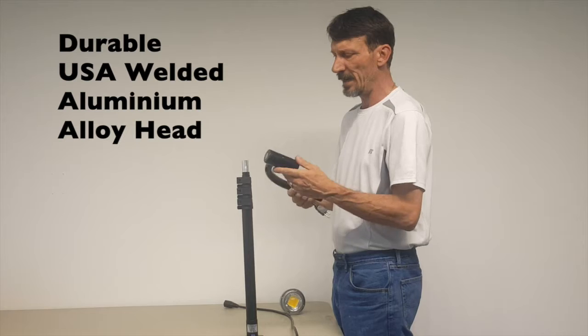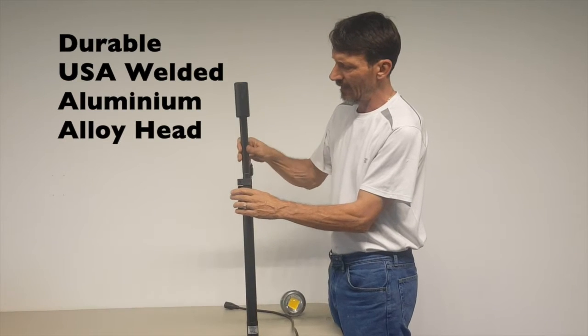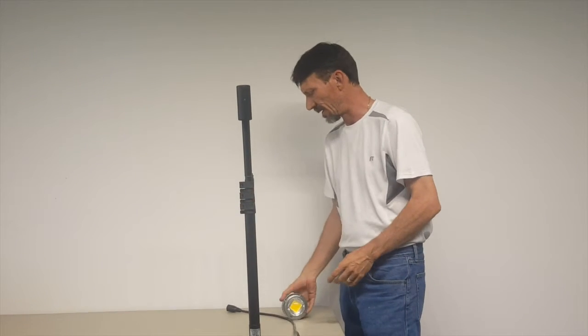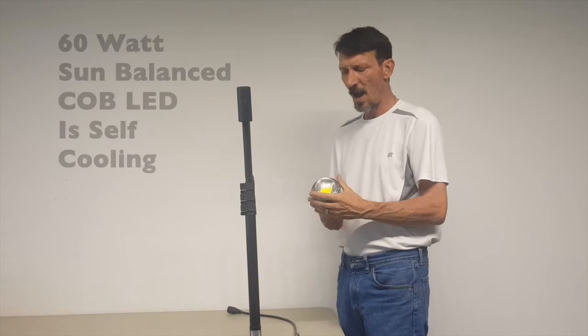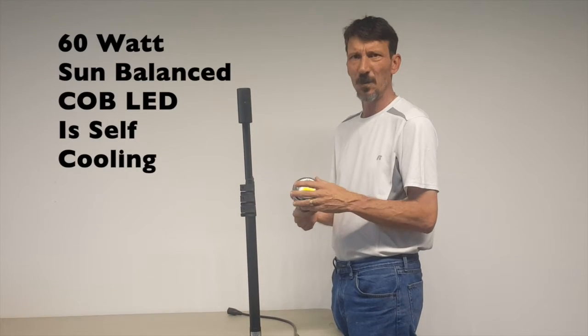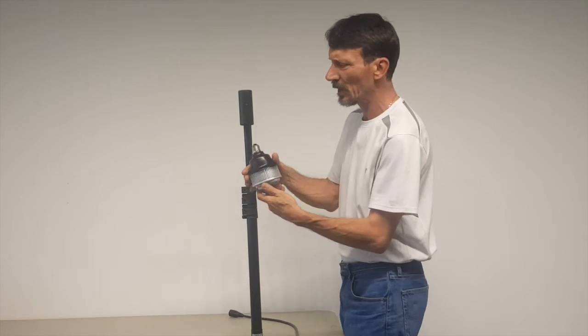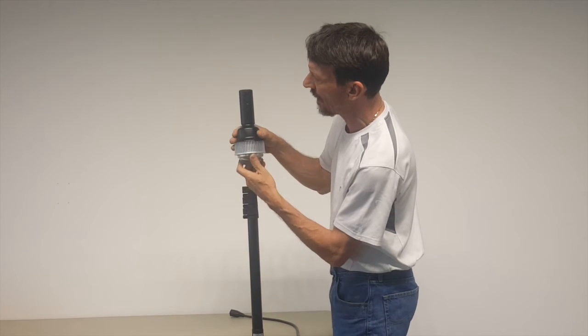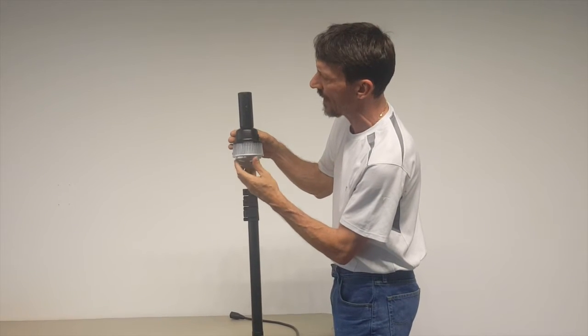Step number two, take our machined aluminum head, slide it onto the stand. This is a 60 watt LED light module, provides 7400 lumens of natural sun balanced light with no heat.